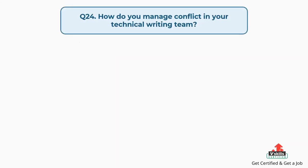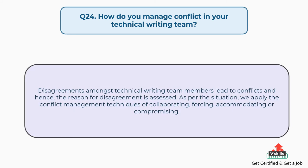Question number twenty-four: how do you manage conflict in your technical writing team? Disagreements amongst technical writing team members lead to conflicts, and hence the reason for disagreement is assessed. As per the situation, we apply conflict management techniques of collaborating, forcing, accommodating, or compromising.